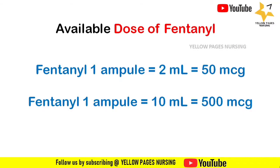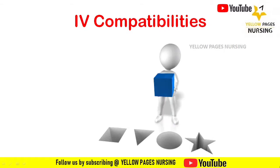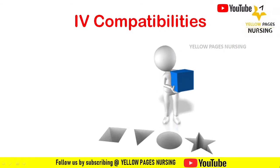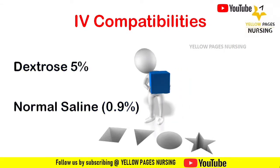The dosage of fentanyl ranges from 0.5 to 10 micrograms per kg per hour IV, and we may follow institutional policies for the dosage. The IV-compatible solutions for diluting injection fentanyl are dextrose 5% and normal saline 0.9%.